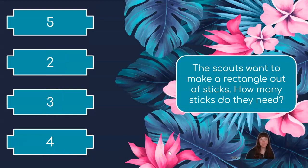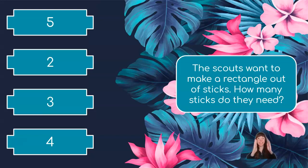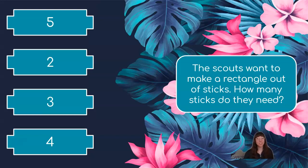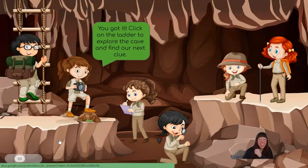Let's think about a rectangle. A rectangle has two long sides and two short sides. That means that we would have one, two, three, four sides all together. If our rectangle has four sides, how many sticks do we need? That's right! We would need four sticks! You got it!